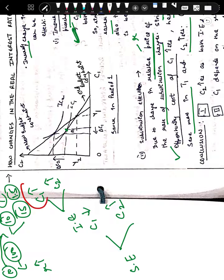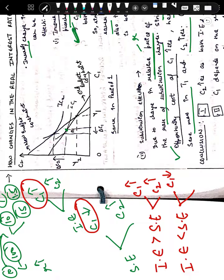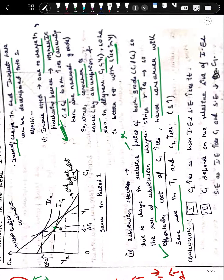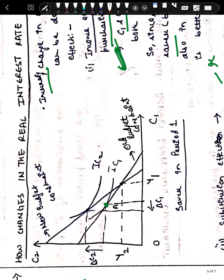To summarize: income effect says consumption in time period one increases; substitution effect says consumption in time period one reduces. If income effect is greater than substitution effect, consumption in time period one will increase and consumption in time period two will increase. But if income effect is less than substitution effect, consumption in time period one will reduce and consumption in time period two will increase. This conclusion holds under the assumption that the person is a saver and real interest rate increases.